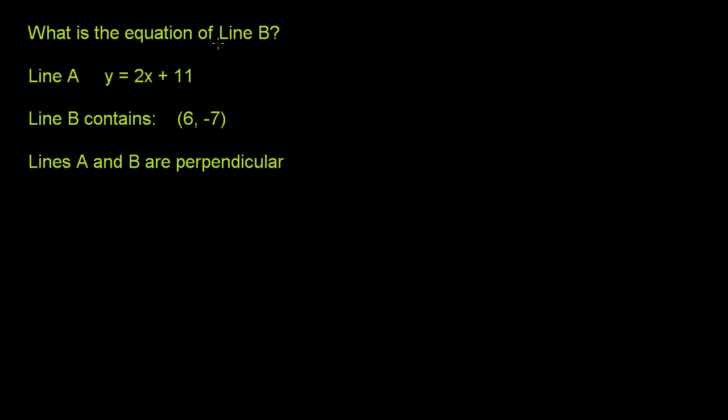We're asked, what is the equation of line B? They tell us that line A has an equation y equals 2x plus 11. They say that line B contains the point (6, -7), and they tell us lines A and B are perpendicular.